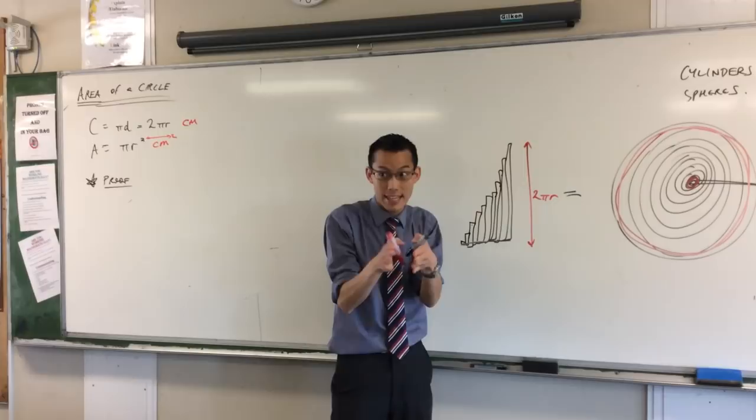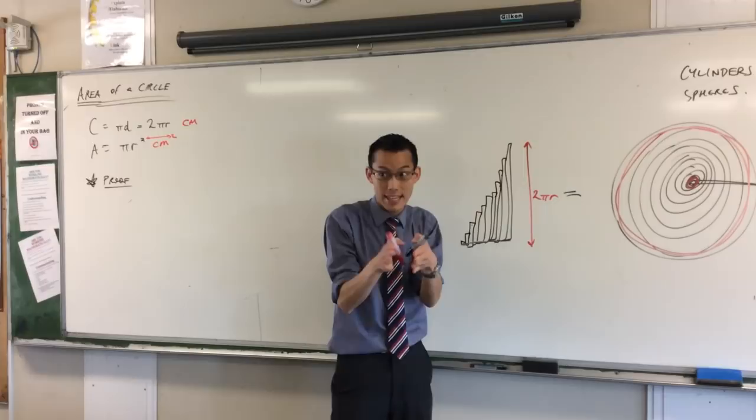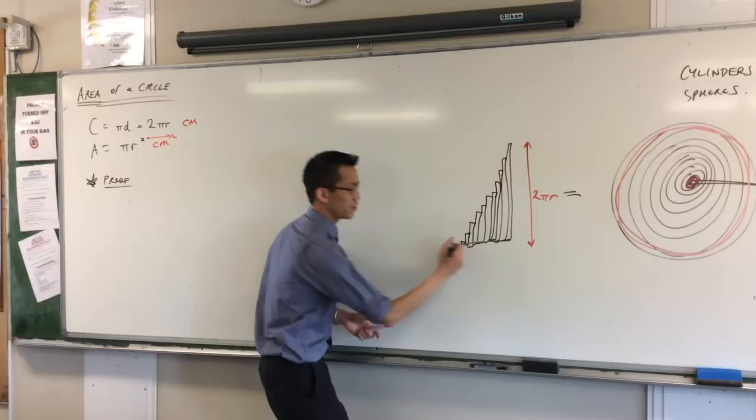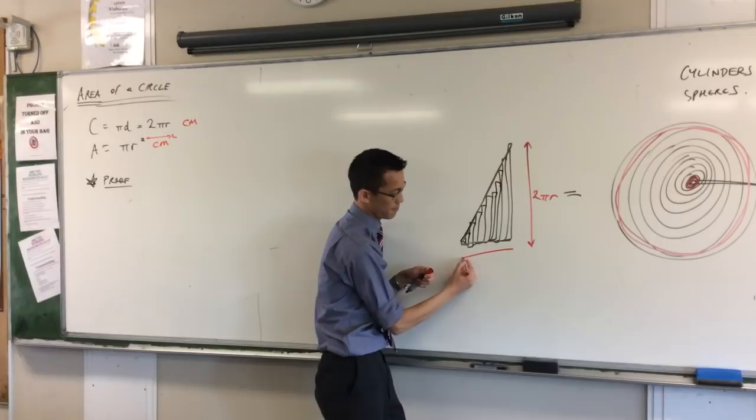Now you can see, if I could draw my rings really, really thin, and I put them all up next to each other, you wouldn't see like a bar graph type shape. You'd just get a triangle, wouldn't you? And there'd be all these little thin lines in here. This one still will be 2 pi r tall.